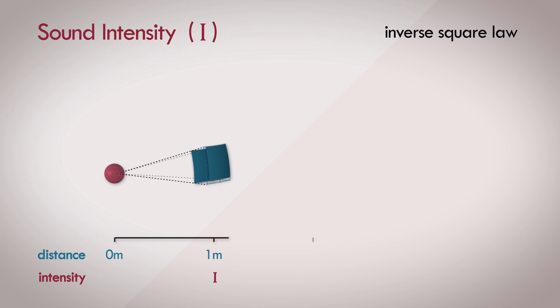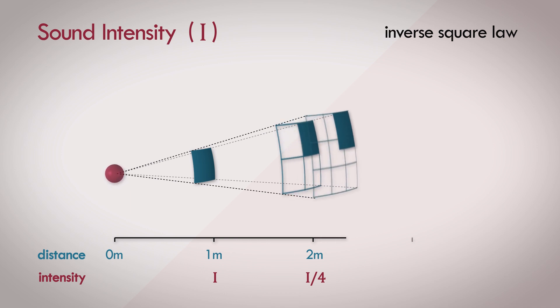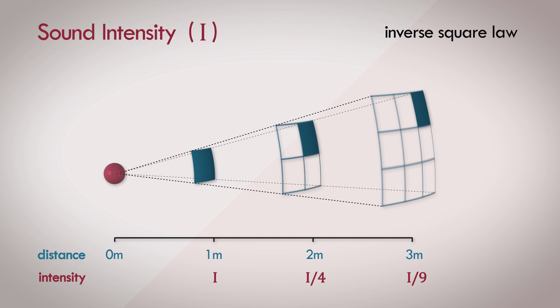As the sound wave travels further, at 2 meters from the source, the sound energy that was once flowing through that patch is now flowing through a larger area of space, more precisely 4 times larger than before. The energy is merely redistributed to a larger area of space. So the intensity drops by 4. Similarly, at 3 meters from the source, the intensity drops by 9. So you can see that the intensity is inversely proportional to the square of the distance.